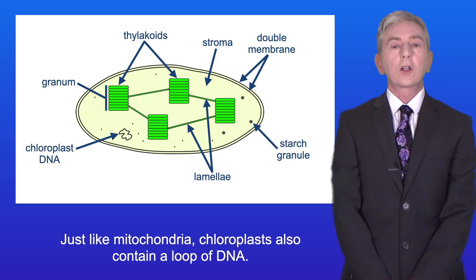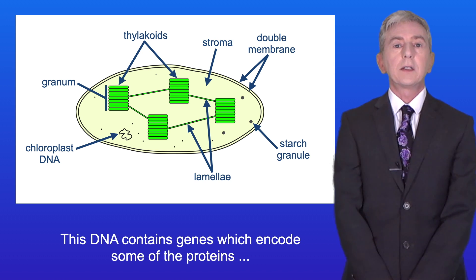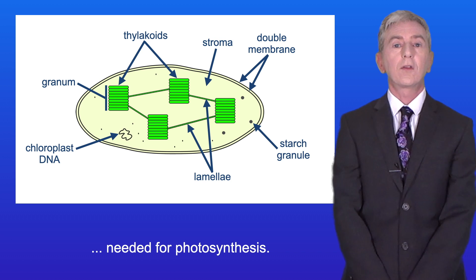Just like mitochondria, chloroplasts also contain a loop of DNA. This DNA contains genes which encode some of the proteins needed for photosynthesis.